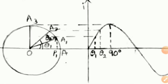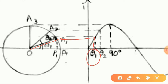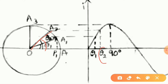Let us study about phasor representation of an alternating quantity shown here. A vector OA is plotted at the starting point of the sine wave. Vector OA1 is drawn at an instant of theta 1, having a theta 1 angle from the reference line. Vector OA2 is drawn with an angle of theta 2 at another instant, and vector OA3 is plotted at 90 degrees with the reference line OA.